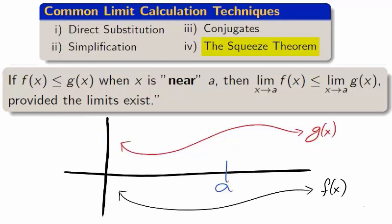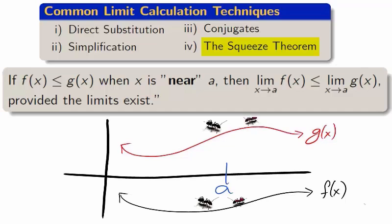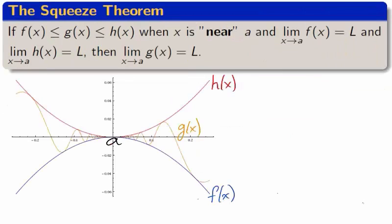Our final technique is known by many names. We will call it the squeeze theorem, but it can also be called the sandwich theorem or the pinch theorem. The squeeze theorem is the consequence of the observation that if one function g, colored in red, is larger than the function f, colored in black, that the limit of g is larger than the limit of f as x approaches a, provided the limit exists, of course.